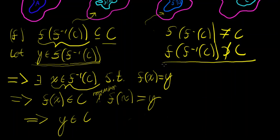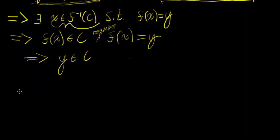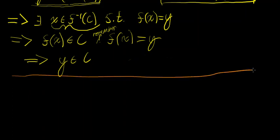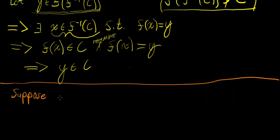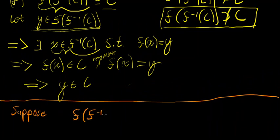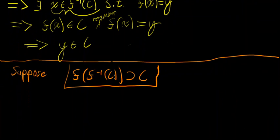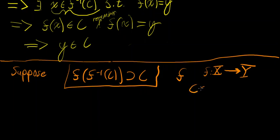Now let's prove the further statement: we're going to go beyond what the problem asks and prove why C is not a subset of the image of the inverse image of C in general, i.e., f(f⁻¹(C)) ≠ C. I'm going to prove this by contradiction. Suppose that f of the inverse image of C does contain C — that is, suppose C is a subset of the image of the inverse image of C. If this were true, it would have to hold for all possible f, all possible domains X, all possible codomains Y, and all possible C that are subsets of Y.